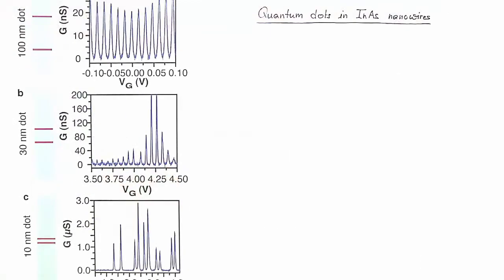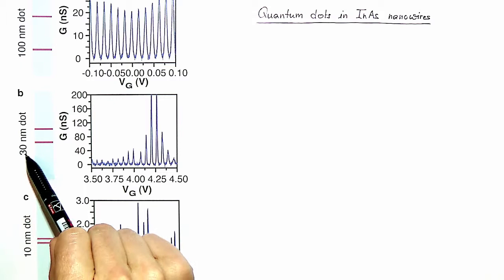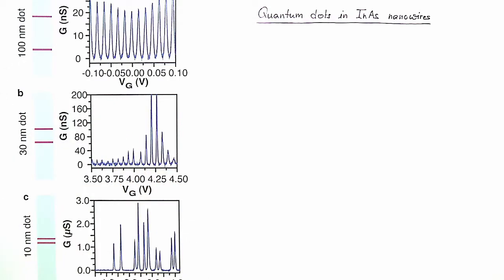In this exercise we consider quantum dots in indium arsenide nanowires. These quantum dots have different sizes ranging from 10 nanometers to over 30 nanometers to 100 nanometers. The first question asks us to discuss the differences in the appearance of these three graphs that you see depicted here.